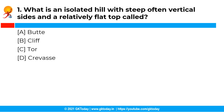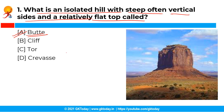The first question is: What is an isolated hill with steep, often vertical sides and a relatively flat top called? The correct answer is option A, that is butte. An isolated hill with steep, often vertical sides and a small and relatively flat top is called a butte. The word butte means a small hill.